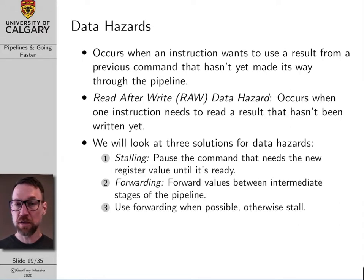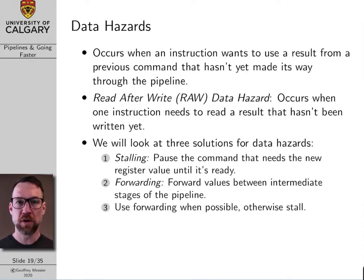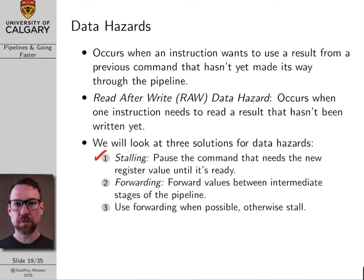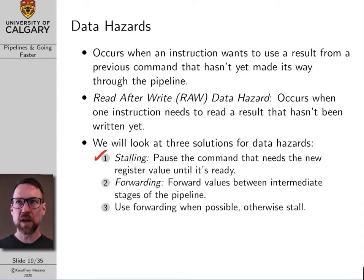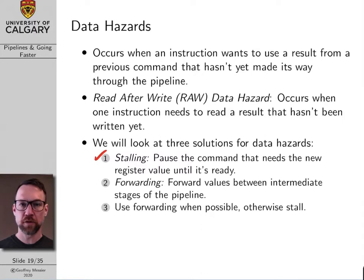There are basically three solutions for data hazards. The first one we already looked at with our no-op example, and that's stalling. Stalling is basically just pausing the pipeline — freezing it — waiting for the first command to finish executing, and once the result is ready, letting the next command proceed. It works, but we don't like it because it defeats the purpose of having a pipeline. If we just wait for the first command to finish before the second command begins, we're kind of back to the same situation as a single cycle processor.